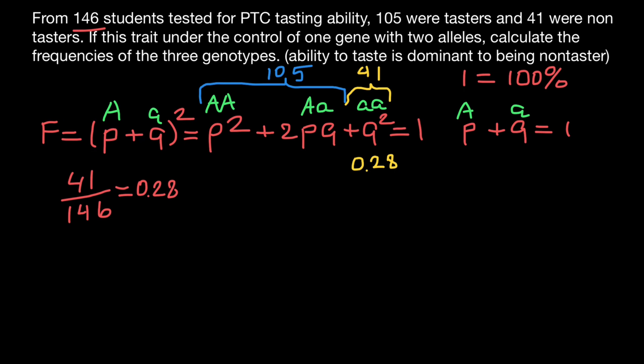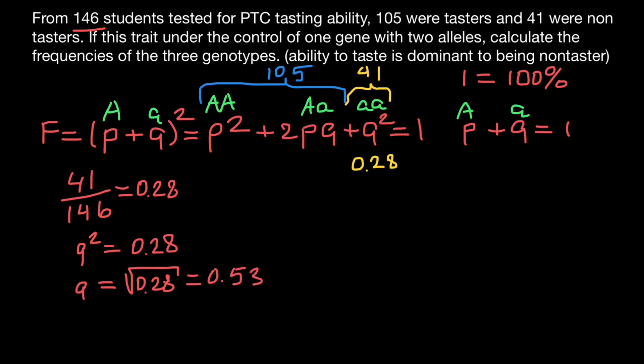That means the other two genotypes make up the rest, which is 0.72. Now we need to find the frequency of the dominant and recessive alleles. Since we know that q² equals 0.28, we can find q: the square root of 0.28 equals 0.53 (rounded).